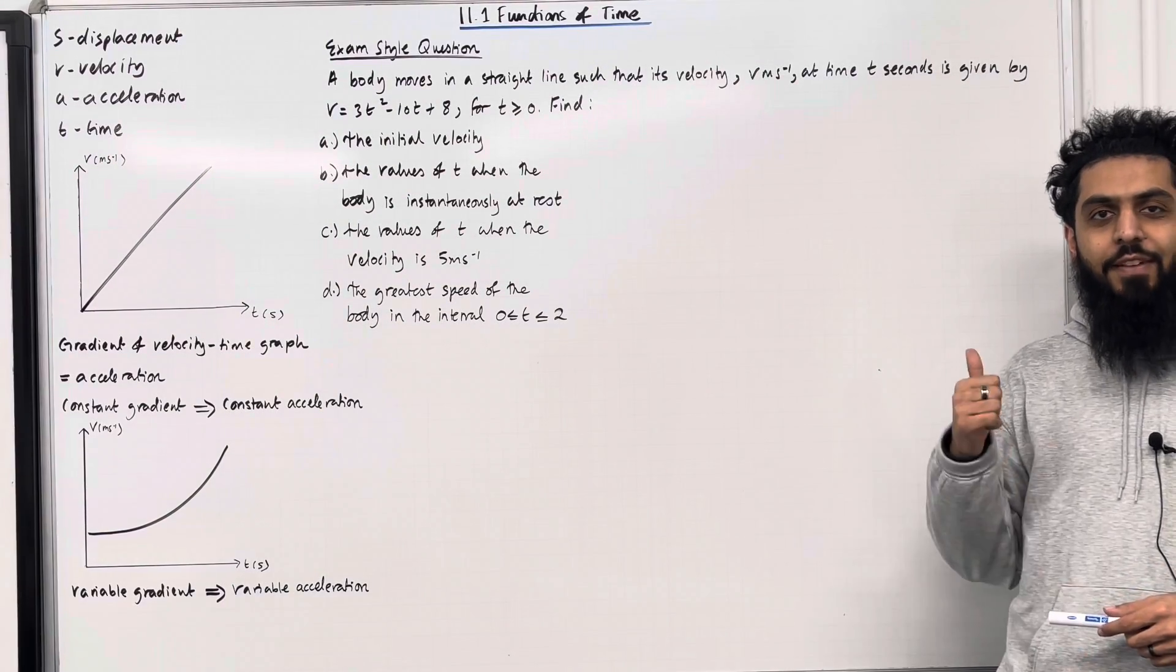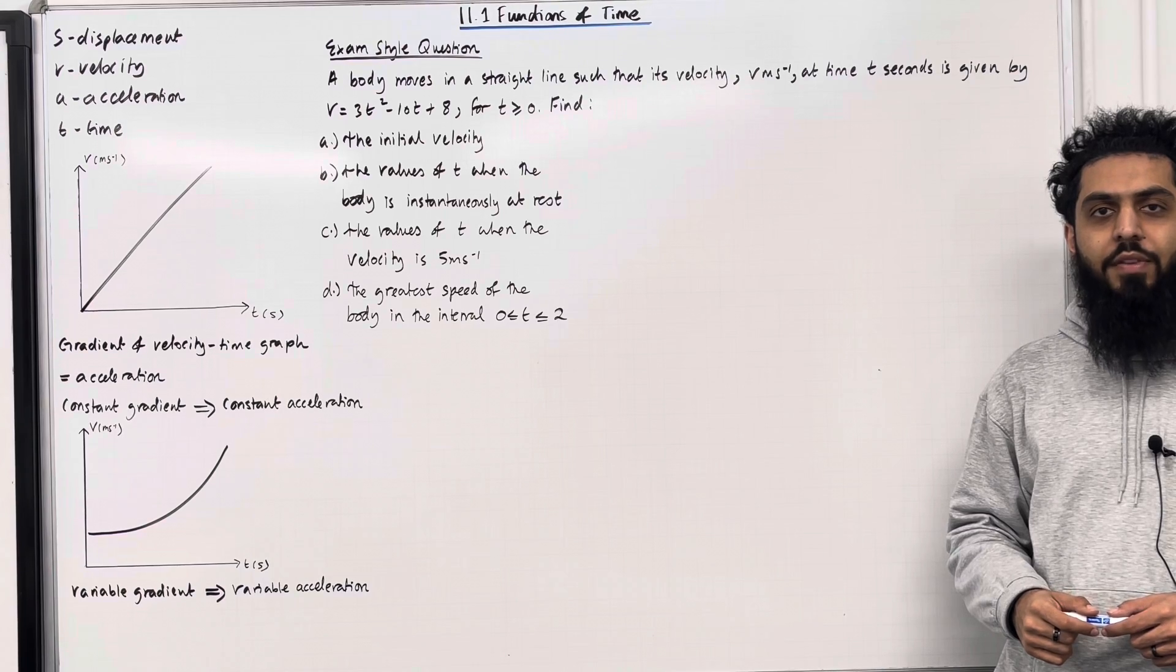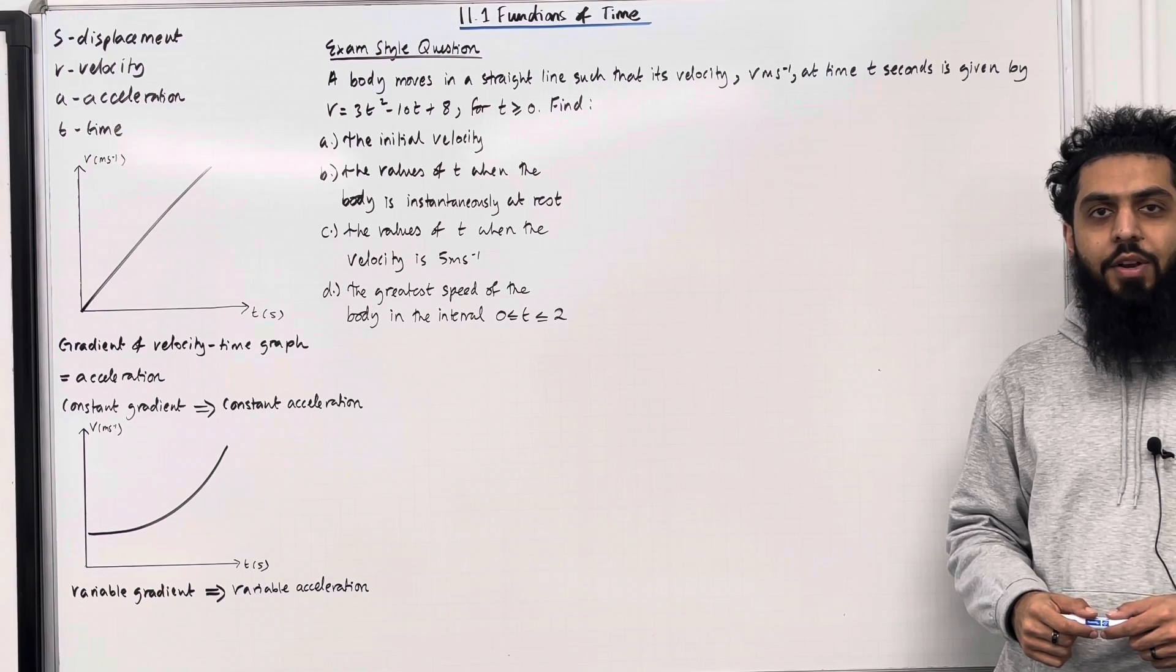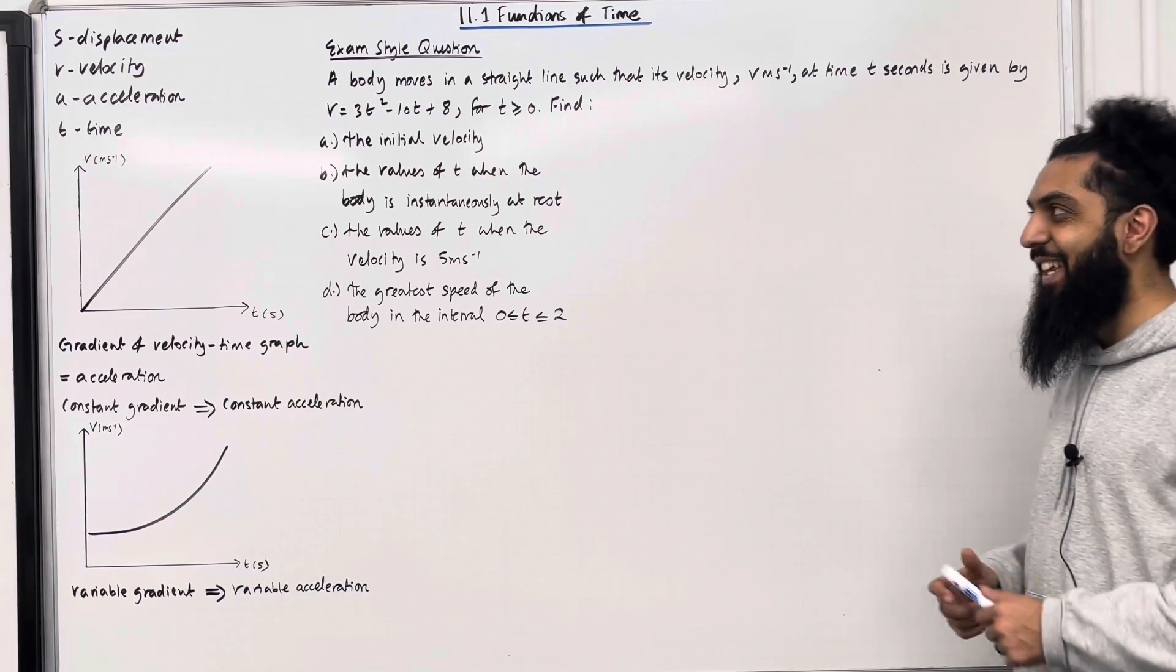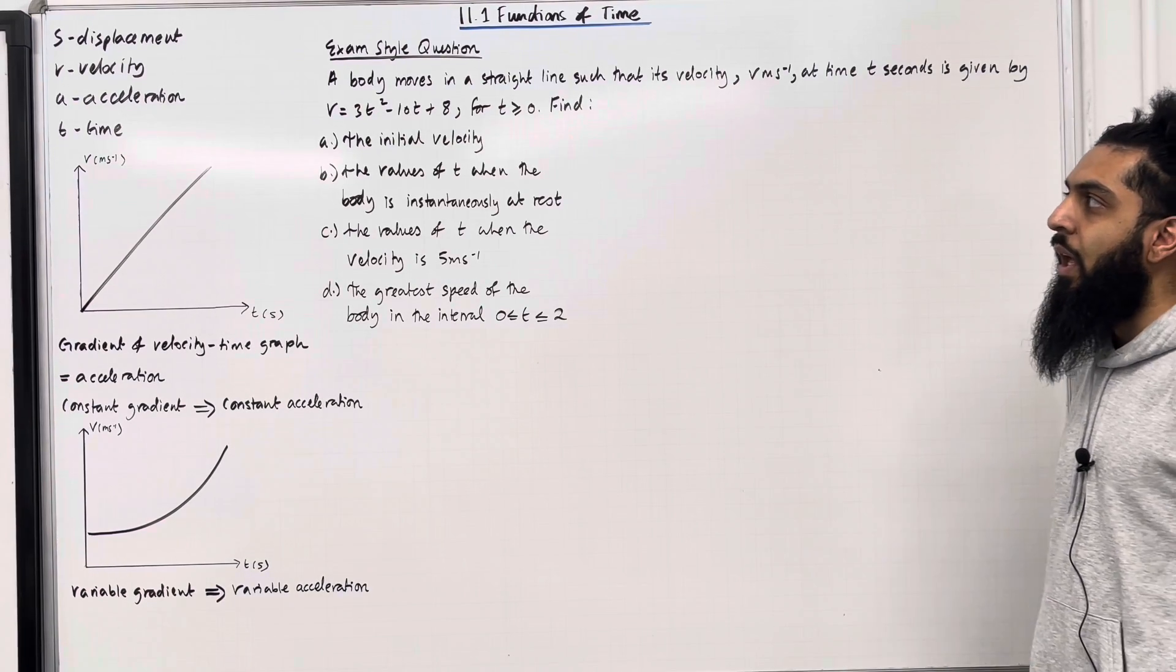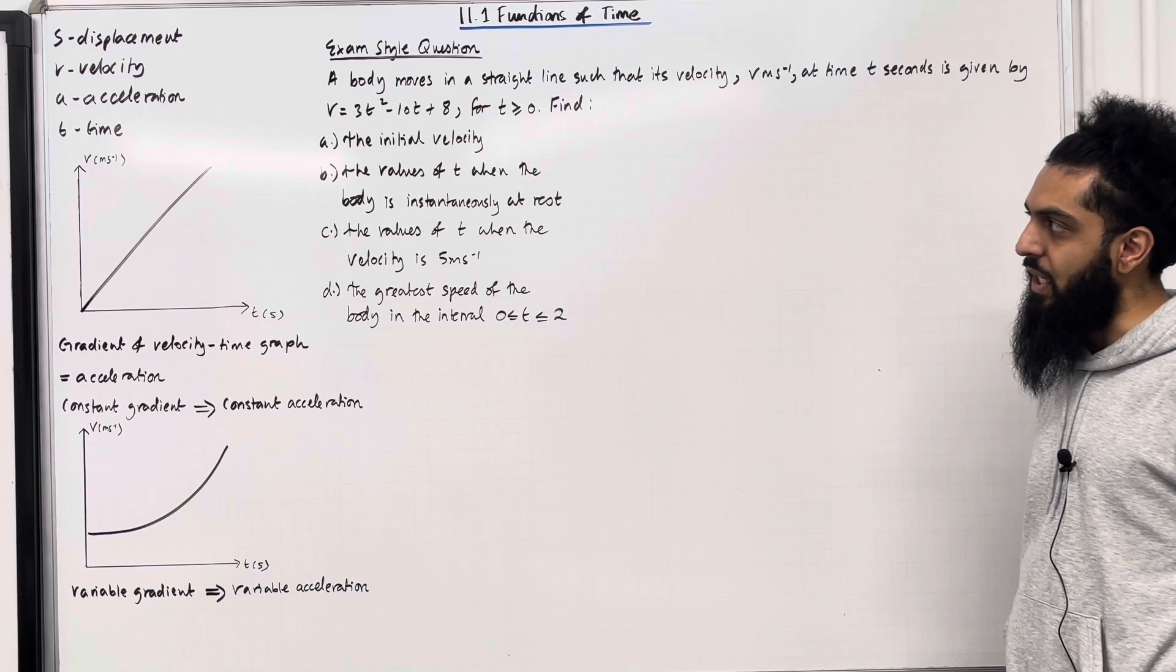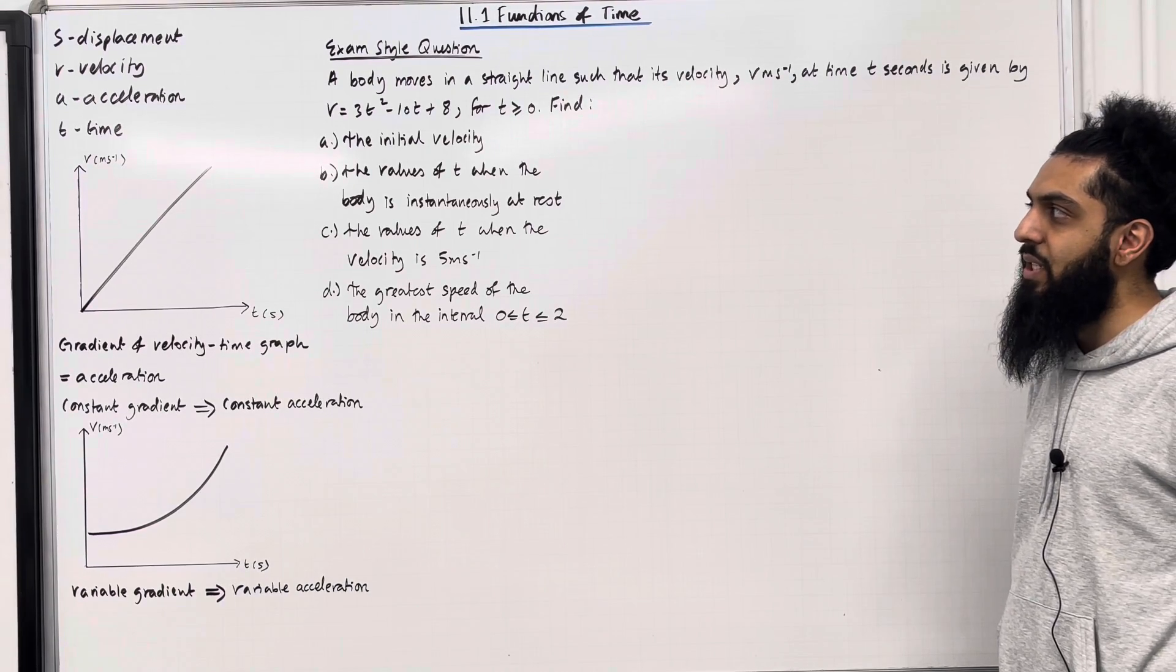Welcome back. In this teaching video, I'll be looking at 11.1 functions of time. 11.1 represents Chapter 11, Section 1 of the Pearson A-Level Maths Applied Maths Year 1 textbook. Let's have a look at the key facts of this section, starting off with some important notation. We have that S represents displacement, V represents velocity, A represents acceleration, and T represents time.